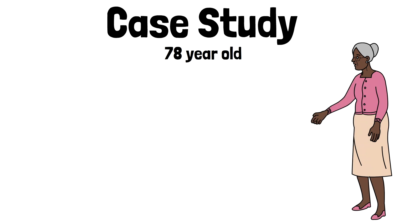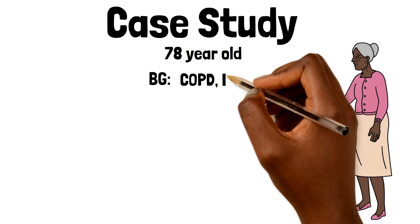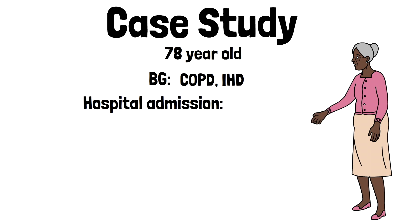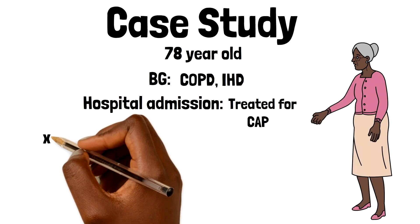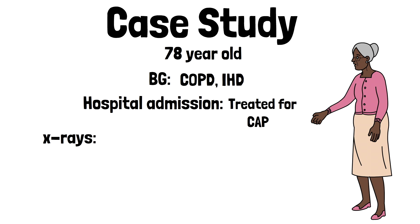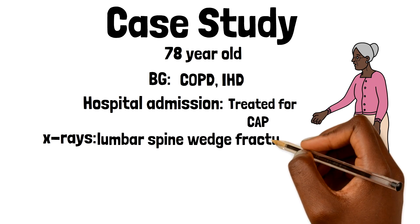Mary is a 78 year old lady with a background of COPD and ischemic heart disease. She was in hospital two days ago due to a fall and some chest symptoms. She was discharged following treatment for a community acquired pneumonia. During her time in hospital, she had x-rays including the chest x-ray and the lumbar spinal x-ray. Her chest x-ray confirmed the presence of consolidation and her lumbar spine x-ray showed multiple old lumbar spine anterior wedge fractures. She's been asked to see her GP about this. She's recovering at home from her chest symptoms and although she's not yet completed her antibiotic and steroid course, she's currently asymptomatic and at her usual baseline. Here are her current medications.